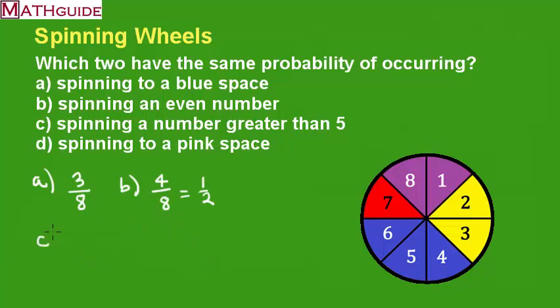Okay, let's take a look at C. Spinning a number greater than five. Well, let's see. Which numbers are greater than five? Six, seven, and eight. There are three numbers, three favorable outcomes. Three numbers that are greater than five on this wheel. So three out of eight.